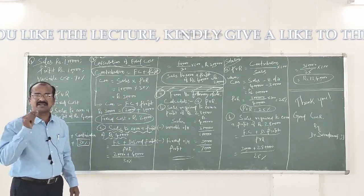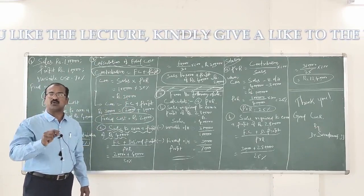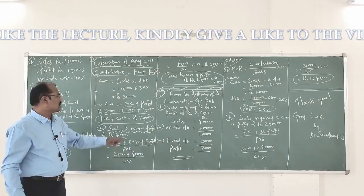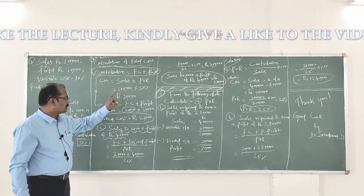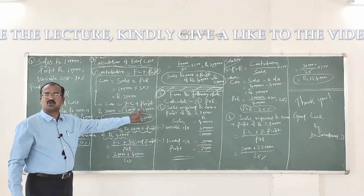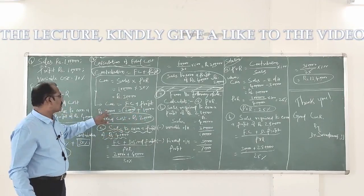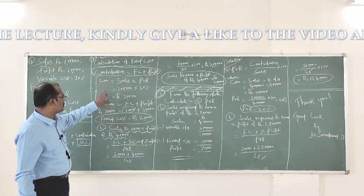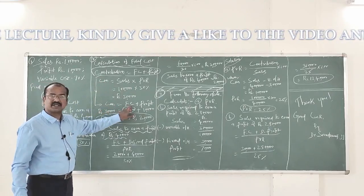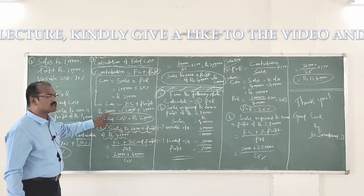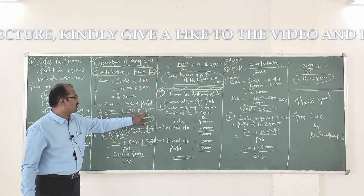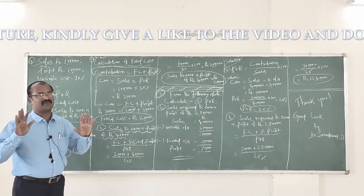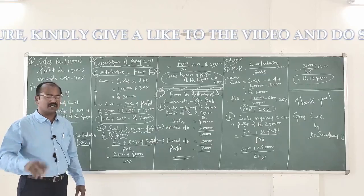When the concern makes sales of 1 lakh rupees, 30,000 rupees of the sales stands for contribution. So if contribution is 30,000 rupees, we subtract profit of 10,000 rupees, and the balance of 20,000 rupees is nothing but fixed cost. Using the equation contribution equals fixed cost plus profit — contribution is 30,000, profit is 10,000, therefore the missing figure 20,000 rupees is the fixed cost. So we have answered question B.